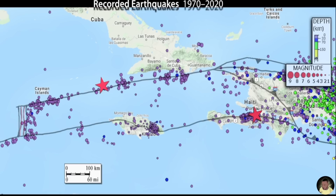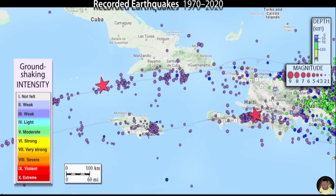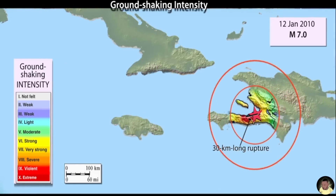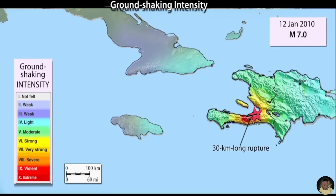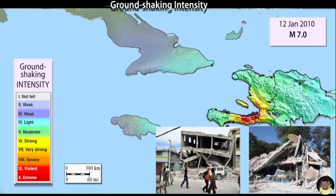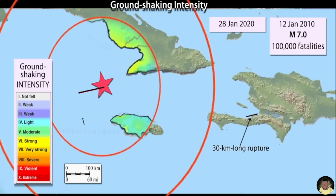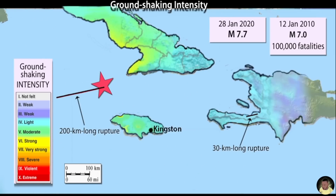Two recent major earthquakes emphasize how proximity to population centers controls human impact. The January 12, 2010, magnitude 7.0 earthquake near Port-au-Prince caused over 100,000 fatalities. Although the January 28, 2020, magnitude 7.7 earthquake on the Oriente fault released 20 times more energy, its location far from populated islands resulted in minimal impact and no fatalities.